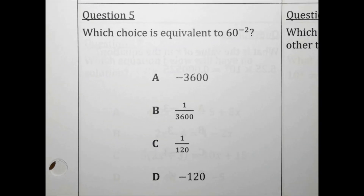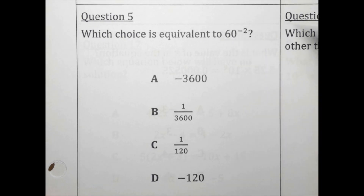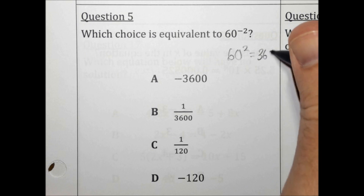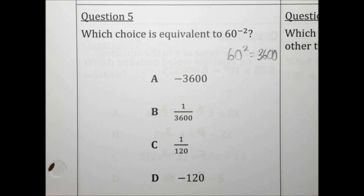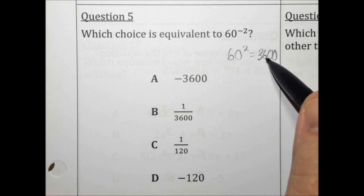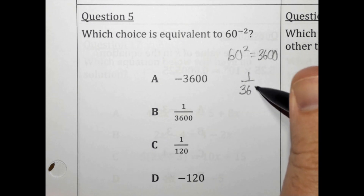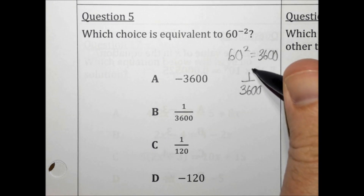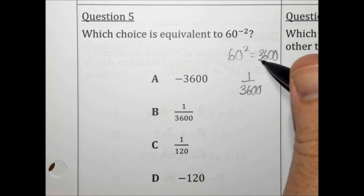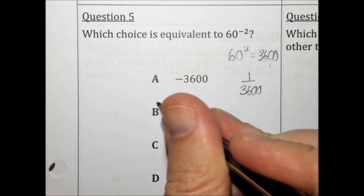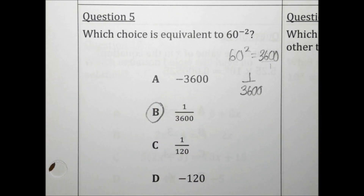Which choice is equivalent to 60 to the negative second? Let's do this problem without the negative: 60 squared is 3,600. The negative exponent takes the answer we just got and takes the reciprocal of it — it flips it upside down. So instead of 3,600 over 1, it's 1 over 3,600. The answer for number 5 is B.